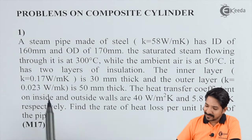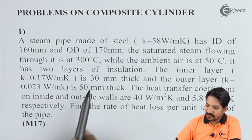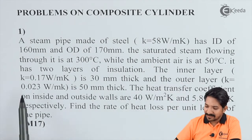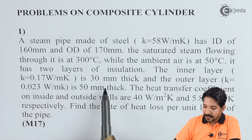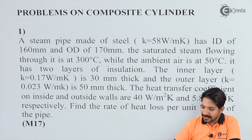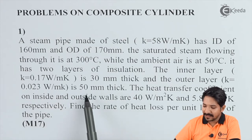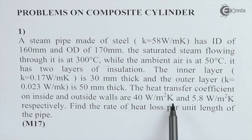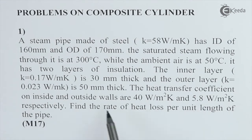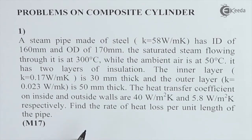The pipe has two layers of insulation. The inner layer has thermal conductivity of 0.17 W/m·K and is 30 mm thick. The outer layer has thermal conductivity of 0.023 W/m·K and is 50 mm thick. The heat transfer coefficients on the inside and outside walls are 40 W/m²·K and 5.8 W/m²·K respectively. We are asked to find the rate of heat loss per unit length of the pipe.